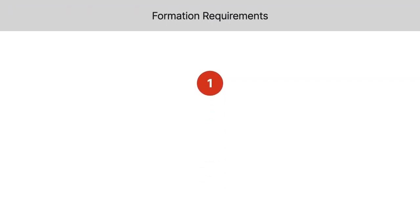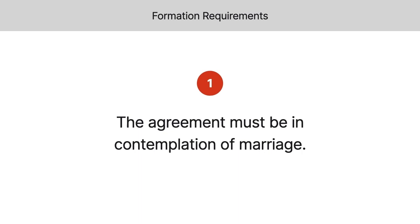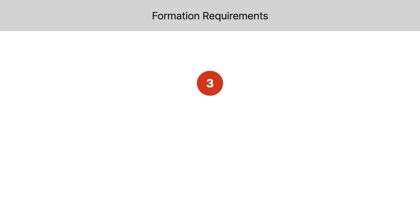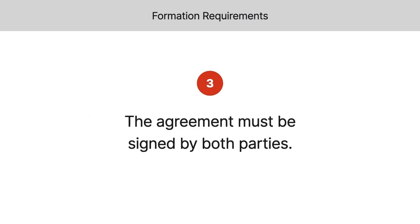There are three key requirements to form a valid premarital agreement. First, the agreement must be in contemplation of marriage, meaning that the parties are prospective spouses. Second, the agreement must be in writing. And third, the agreement must be signed by both parties.